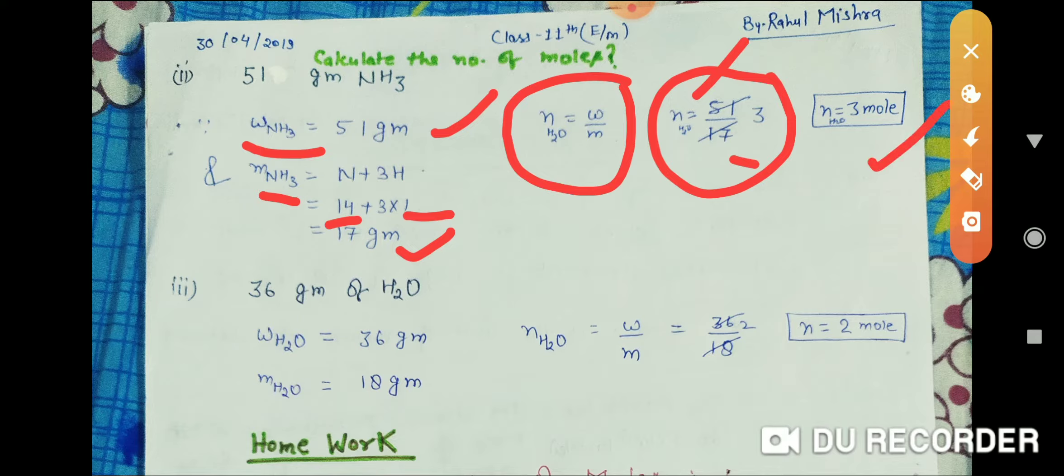...of moles equals 3 moles. This means 3 moles are present in 51 grams of NH3. Now, the next question is: calculate the number of moles present in 36...